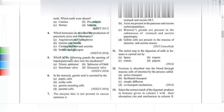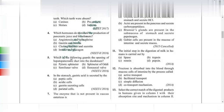Which structure controls the opening of the hepatopancreatic duct into the duodenum? The answer is the sphincter of Oddi. The pyloric sphincter is near the pyloric part, and the ileocecal valve is at the junction where food passing through cannot return. Semilunar valves are present in the heart.